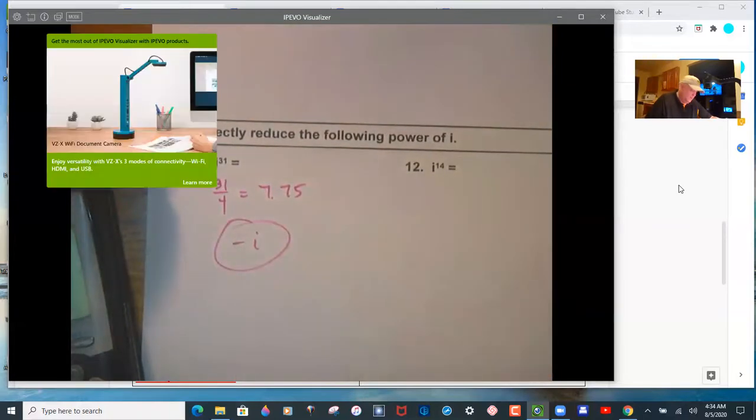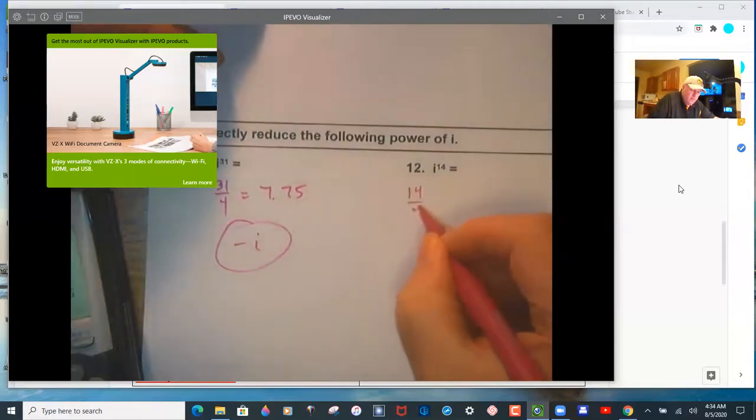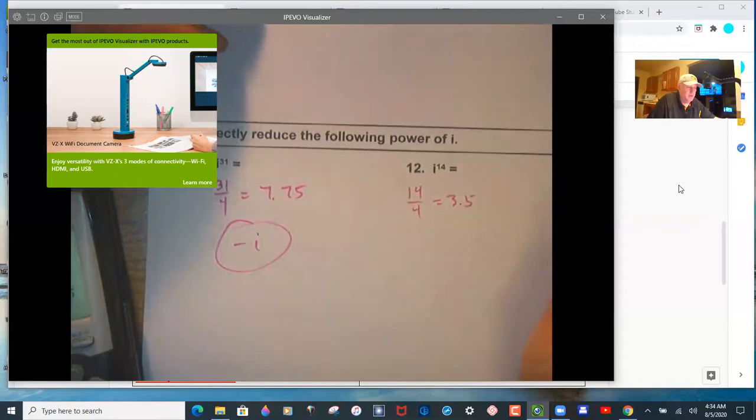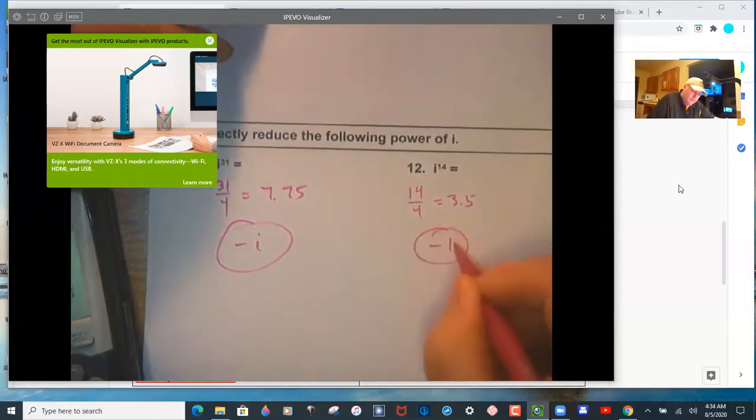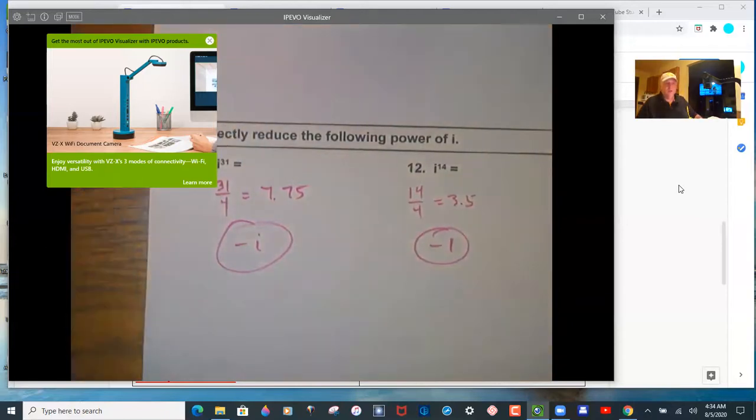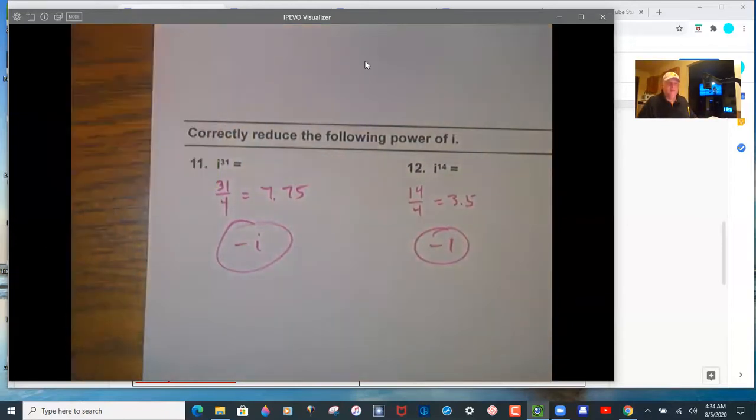And then i to the 14th. So 14 over 4 is 0.5, 3.5. So 0.5 is the remainder. And that puts you at i squared, which is negative 1. Again, you can use your calculator on that.